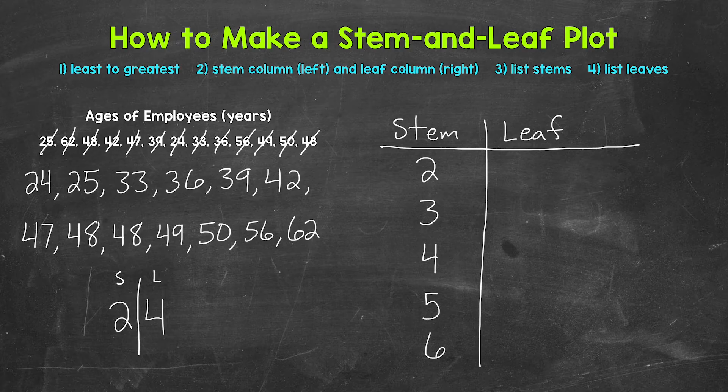So the 20s, the 30s, the 40s, the 50s, and the 60s. Those stems represent the tens digits. We went from the lowest tens digit of 2 all the way to the highest tens digit of 6 and included everything in between.